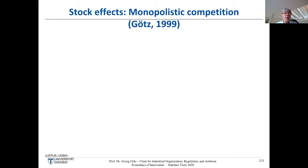Now I present some of my own research, published in the Rand Journal of Economics in 1999. It's an application of the Reinganum setup to a monopolistically competitive industry — an industry with many firms, actually a continuum, where each firm is a monopolist due to product differentiation, but entry drives profits down to zero.